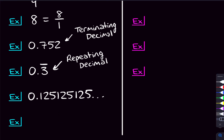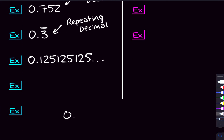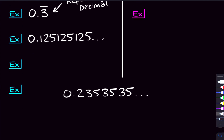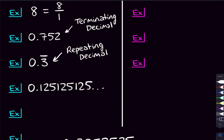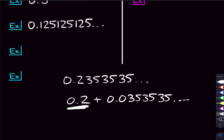I should also note that if you saw something like 0.2, 3, 5, 3, 5, 3, 5 — where the 2 part isn't repeating but the 3, 5 is — this is still a rational number. To prove it, you can write it as 0.2 plus 0.0353535... So you have a terminating decimal, which you can write as a ratio of two integers, plus a repeating decimal, which again you can write as a ratio of two integers. So this still works fine and counts as a repeating decimal.